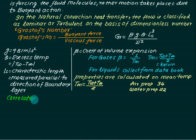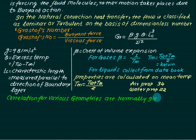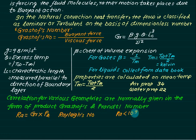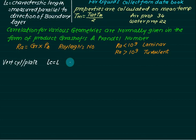To use correlations, check the position and geometry, then select the appropriate table. Data is available for two cases: GrPr less than 10⁹ and greater than 10⁹. The product of the Grashof number and Prandtl number is called the Rayleigh number: Ra = Gr × Pr. If Ra < 10⁹, natural convection is laminar; if Ra > 10⁹, it is turbulent. For a vertical cylinder or vertical plate, Lc = L.